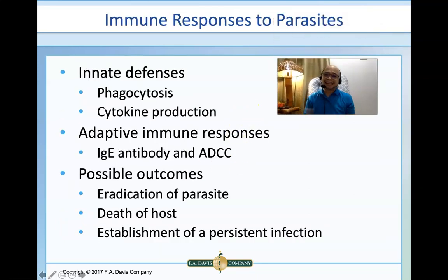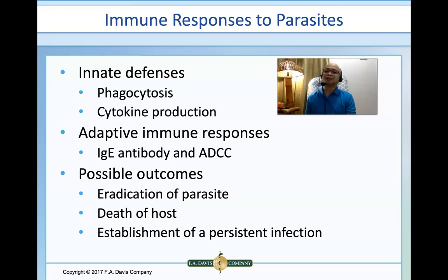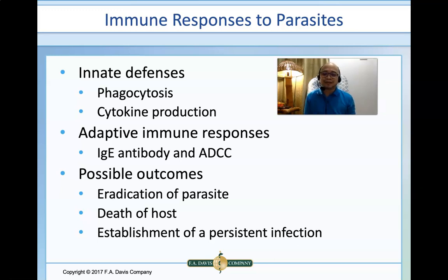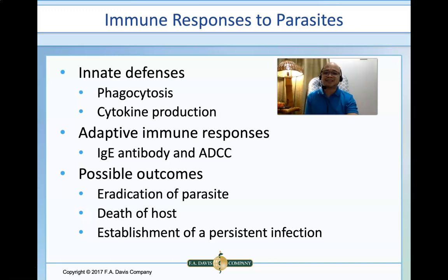Being antigens, our immune system will produce immune responses to these parasites. It could be the innate defense, wherein phagocytosis and cytokine production are possible, or a specific adaptive immune response wherein the primary immunoglobulin produced against parasitic infection would be IgE, and antibody-dependent cell-mediated cytotoxicity would also be possible. The possible outcomes would hopefully include eradication of parasites; however, in some cases, there could be death of the host and establishment of a persistent, chronic infection.